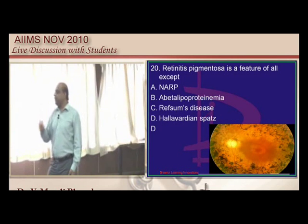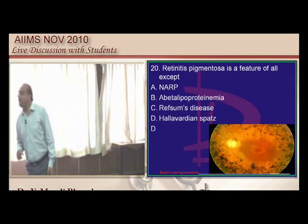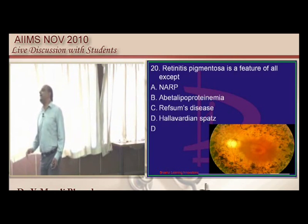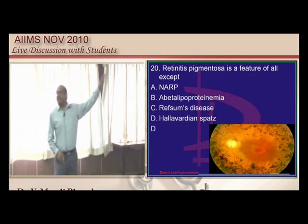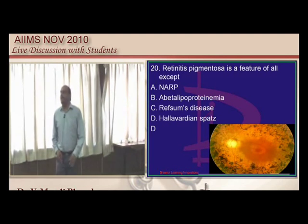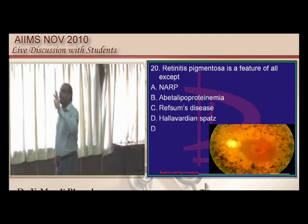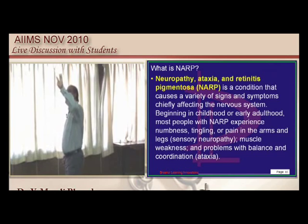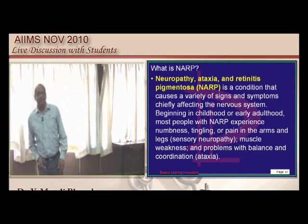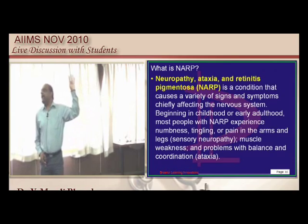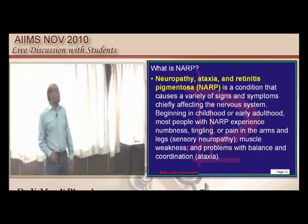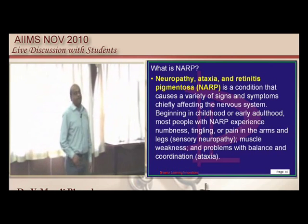Bone-spicule pattern of retinitis pigmentosa — what are the underlying causes? It can be seen in Refsum's disease, abetalipoproteinemia, and NARP. What does NARP stand for? N for neuropathy, A for ataxia, with retinitis pigmentosa — that is basically called NARP.